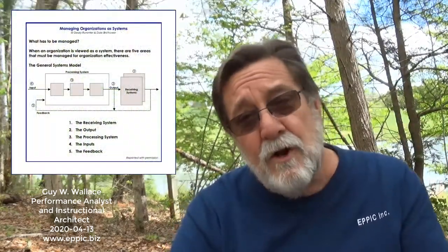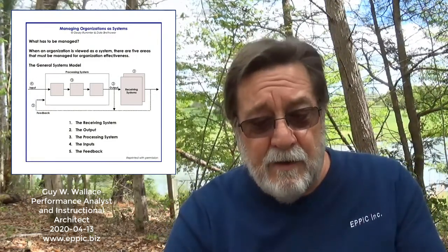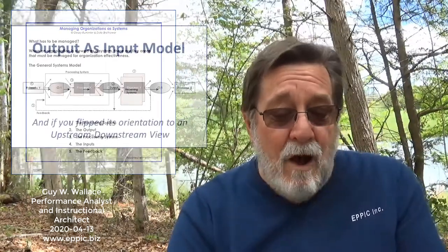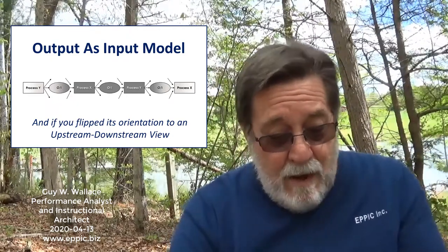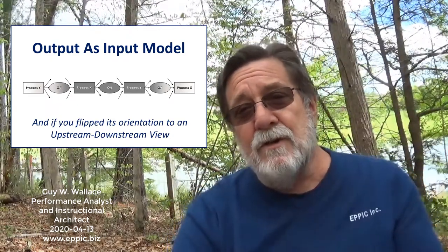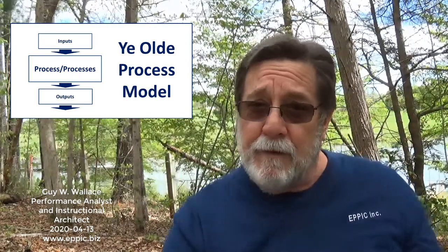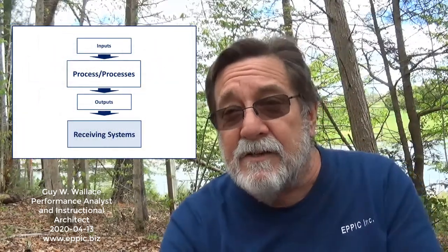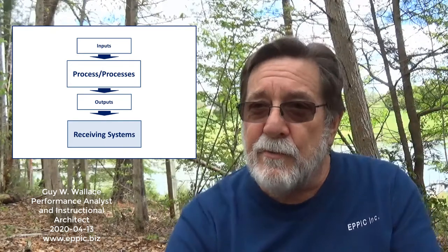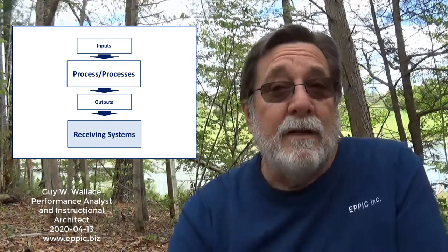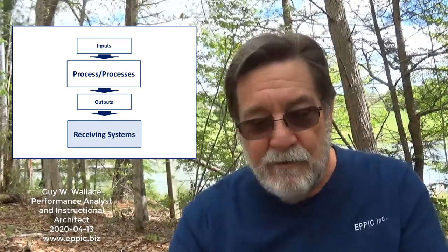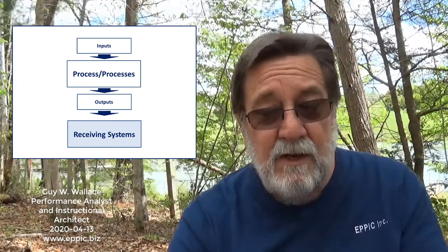Let's take a look at a version of the general systems model as Gary labeled it. Now let's look at my output-as-input model — pretty simple. I'm flipping that left-to-right orientation to a top-to-bottom, upstream-to-downstream orientation, which is what I call 'ye olde process model.' Then let me add one more element: the receiving system, which is part of the general systems model — representing one of potentially more receiving systems downstream from the operation you're looking at.